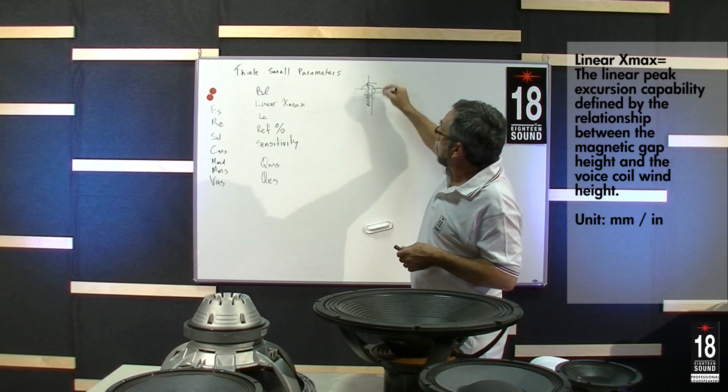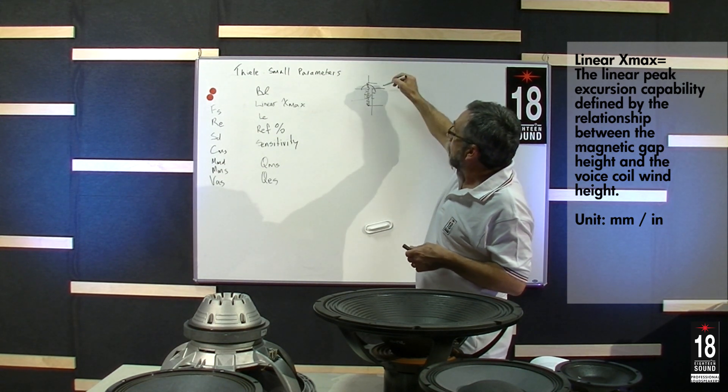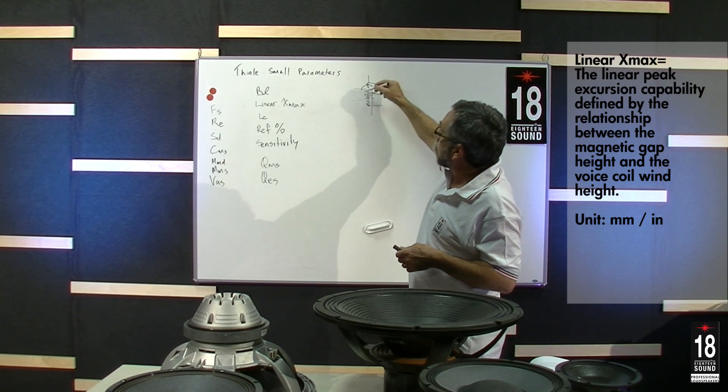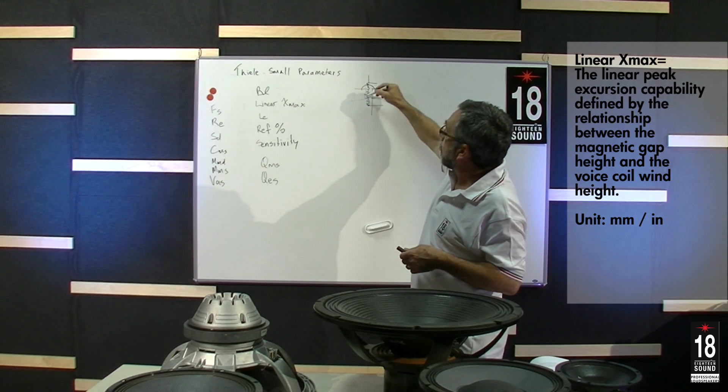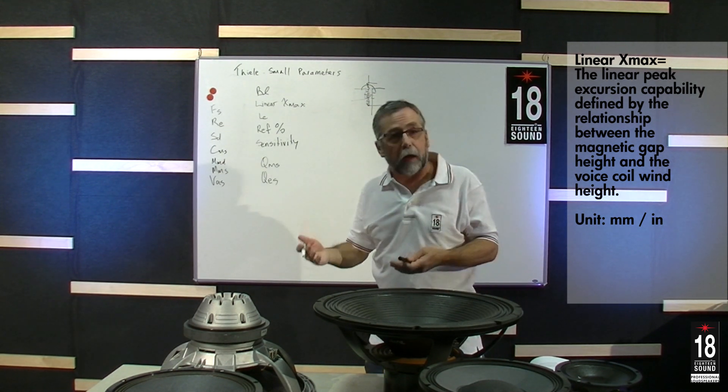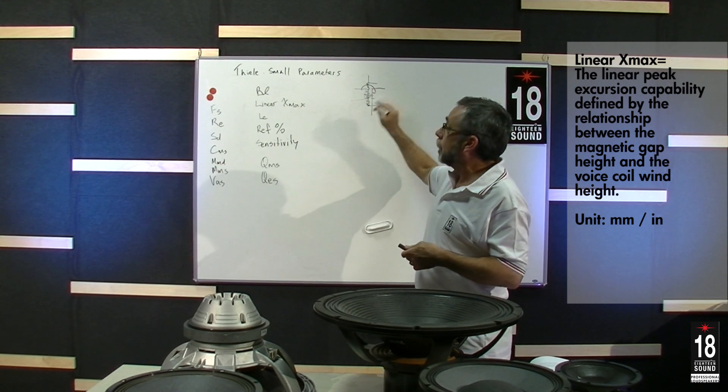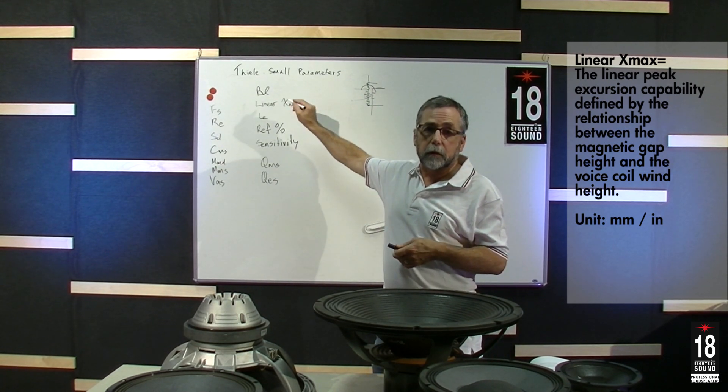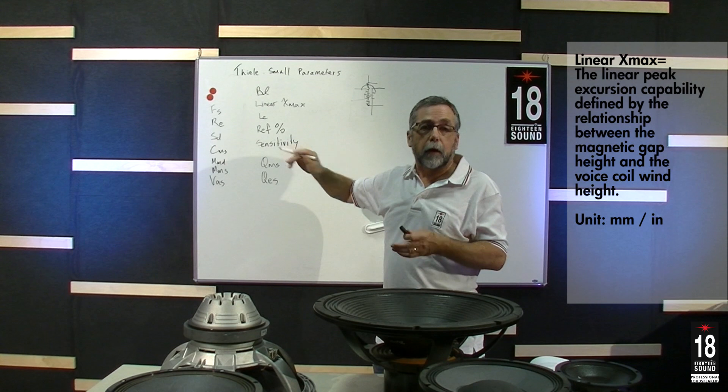We typically have an overhang, and if we subtract the gap height from the overhang and divide by two and add a factor for the fringe field, we'll come up with a linear X number, X defining excursion.